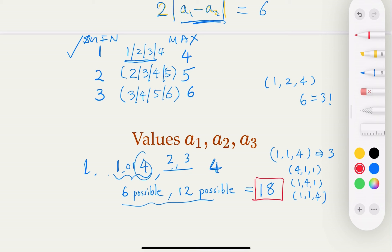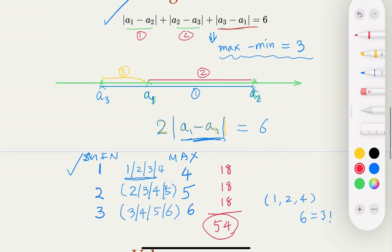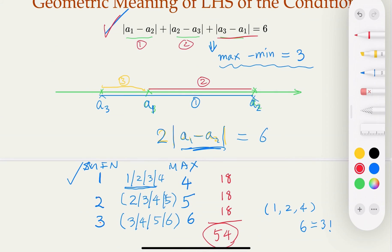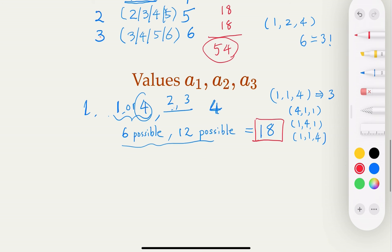Now, similarly, for 2, 5 and for 3, 6, each would have 18 outcomes. So the total would be 54 outcomes where the result satisfies this equation. But if you throw a die three times, each with six possibilities—one to six—so the all outcome would be six to the third power. This is the total set. And the event that you're interested in is only 54 out of the total here.